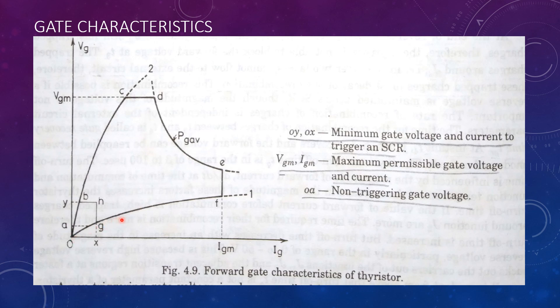Curve 1 represents the minimum values of voltages required to turn on a thyristor. Curve 2 represents the maximum value of voltages that can be applied to a thyristor without damaging it.